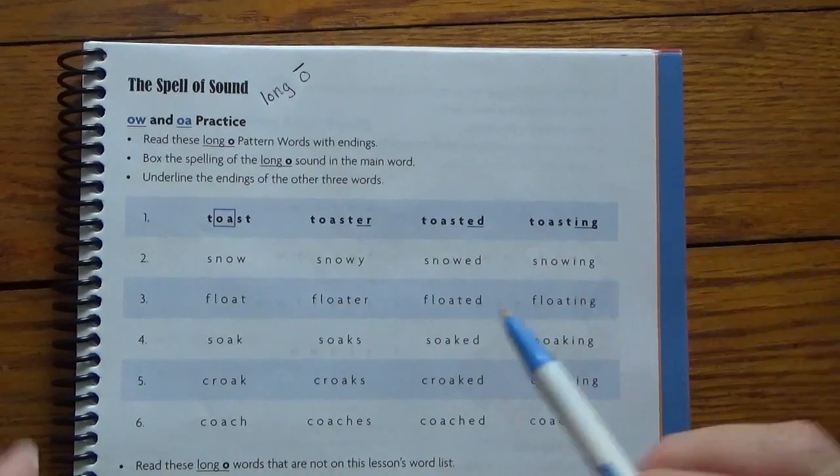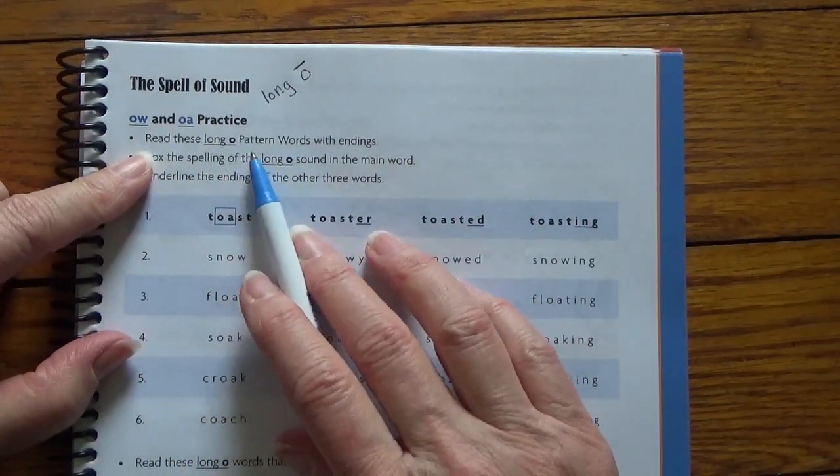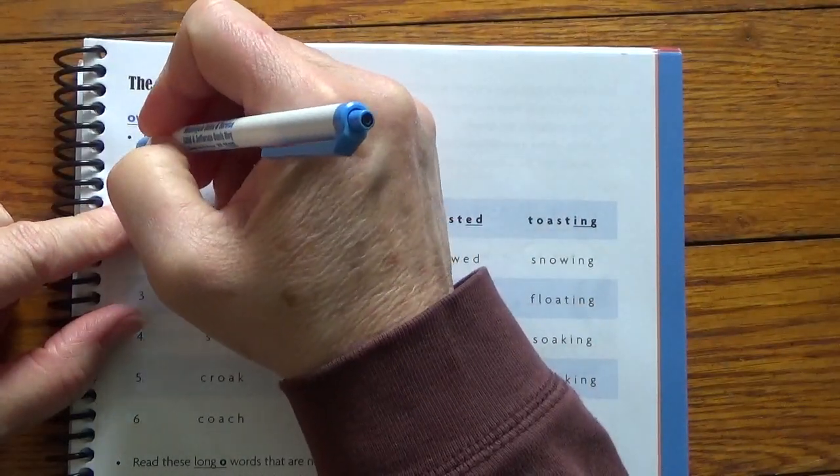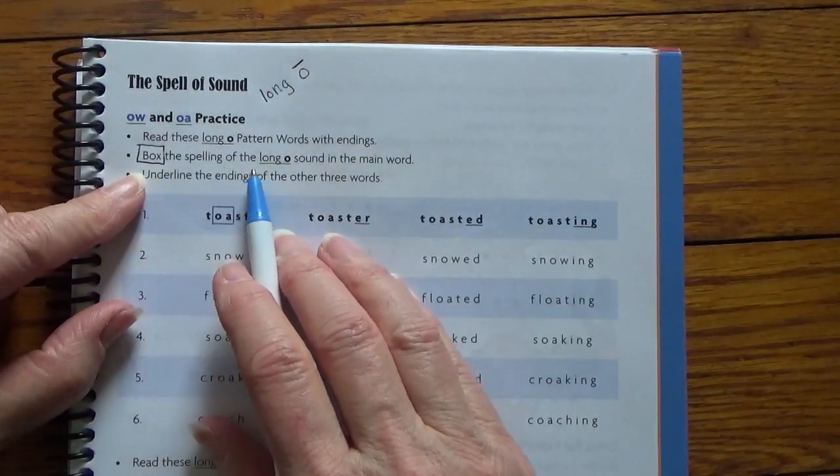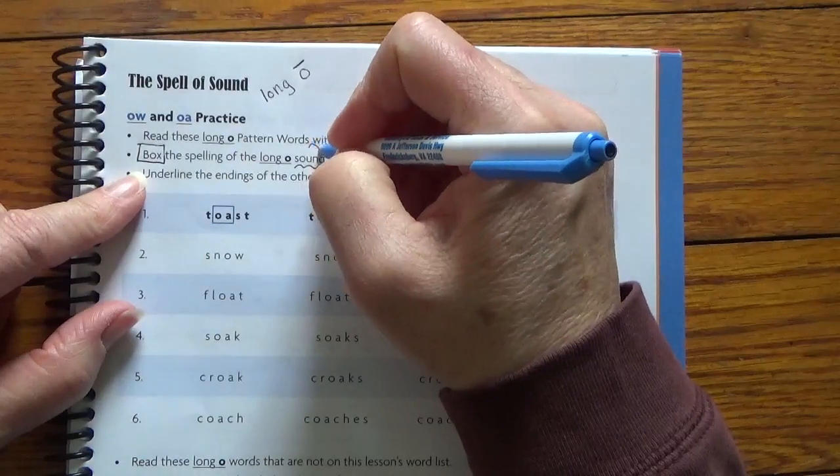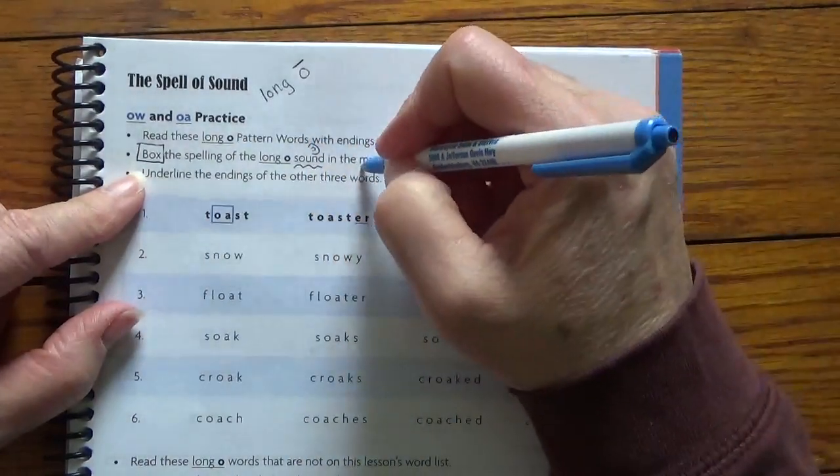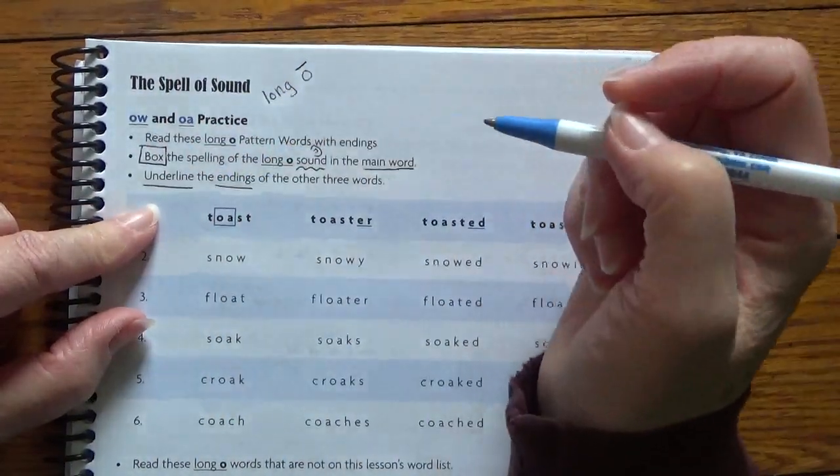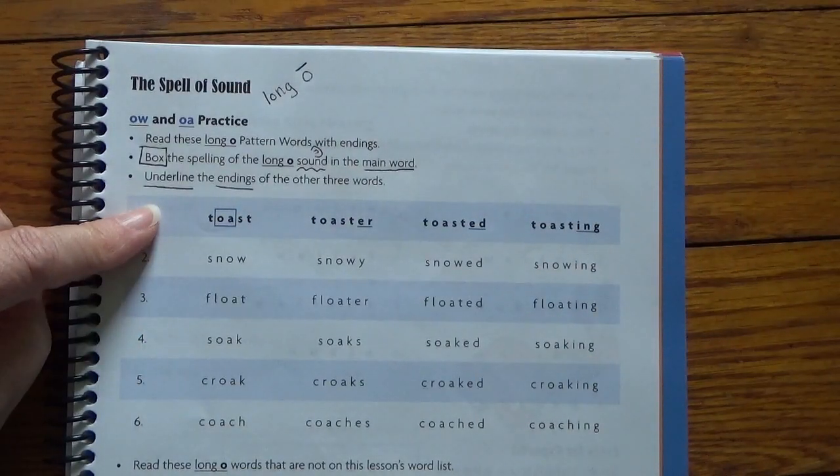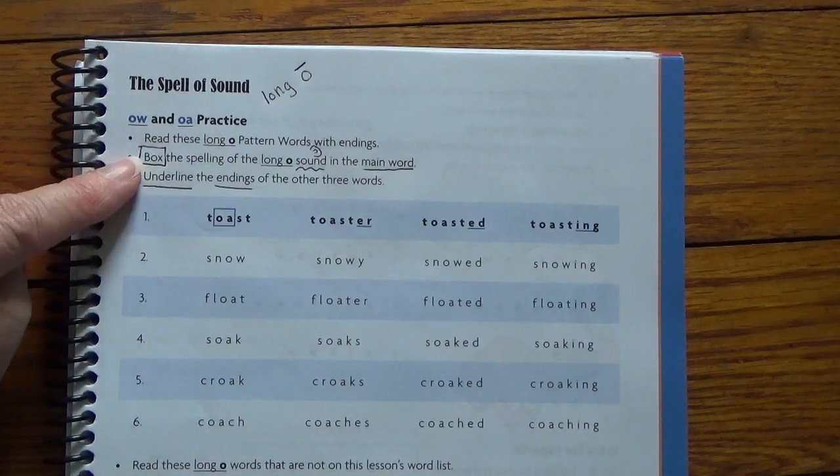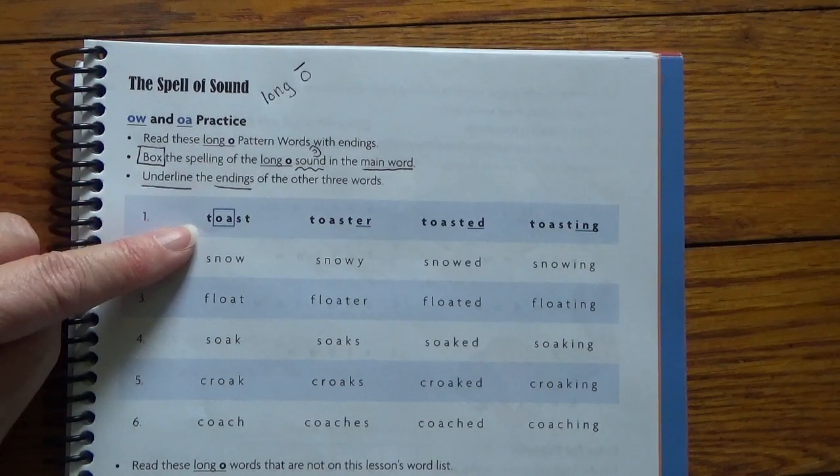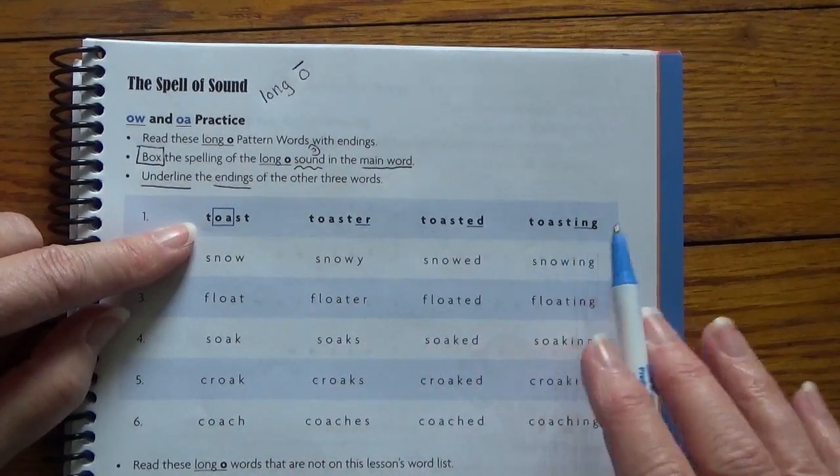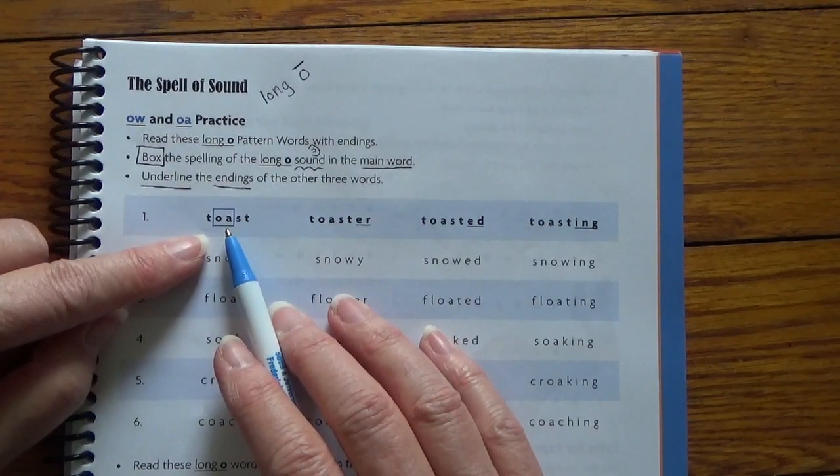Let's see. What are we going to do? Read these long O pattern words with endings. I can handle it. Better box the last time I circled. So I'm going to box the spelling of the long O sound. Maybe I'll draw an arrow so I remember in the main word, and then underline the endings of the other three words.